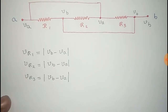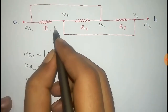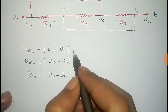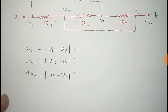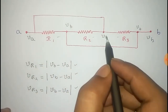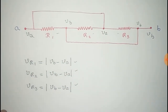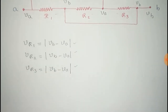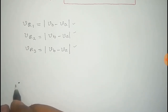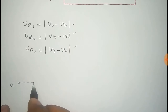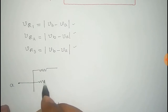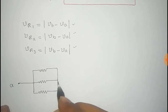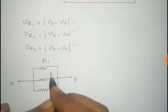You can see that the potential difference across all three resistors R1, R2, and R3 have the same value. So we can say that these three resistors are in parallel connection. The equivalent circuit has terminal A and terminal B with R1, R2, and R3 connected in parallel between them.